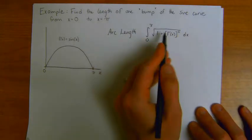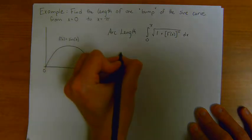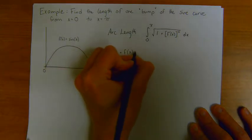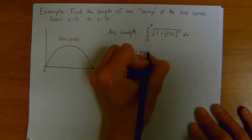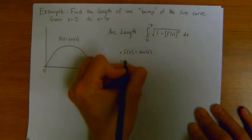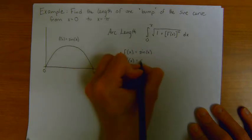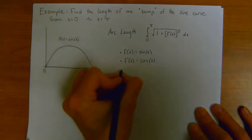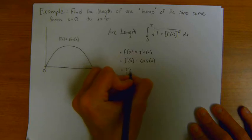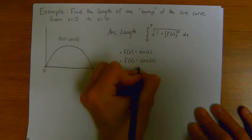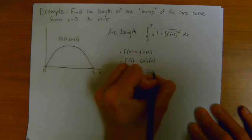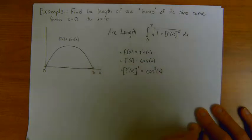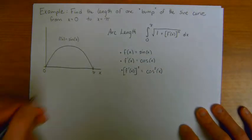So recall from our formula, arc length is given by the equation from starting point to ending point in terms of x. In this case, we have to do a little scratch work. We have the fact that f of x is equal to sine of x. And so that means that the derivative, f prime of x, is equal to the cosine of x. Notice that I'm taking the derivative first, and then the derivative squared is equal to cosine squared of x.